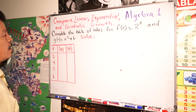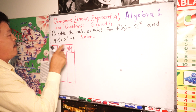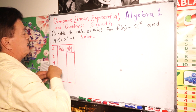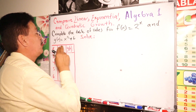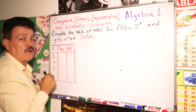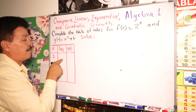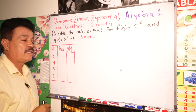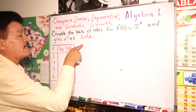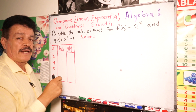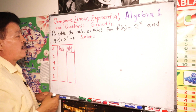In algebra class, the topic is to compare linear, exponential, and quadratic growth. The program asks us to complete the table of values for f(x) = 2 to the x power and g(x) = x squared plus 6. Both f(x) and g(x) grow as x gets longer, so which function eventually exceeds the other?